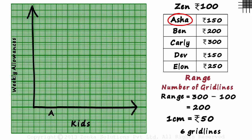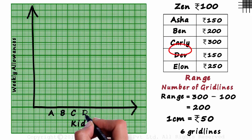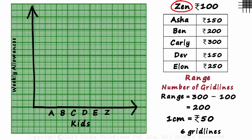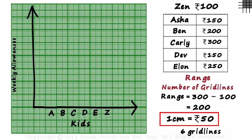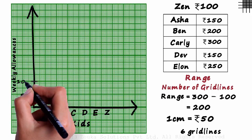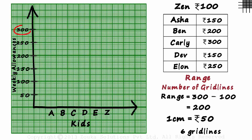We have Asha, Ben, Carly, Dave, Ellen and Zen on the x-axis. As we have chosen a scale of 50 rupees per centimeter on the y-axis, we mark 50, 100, 150 and so on up to 300.